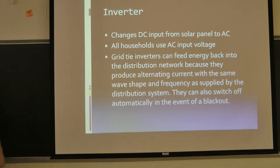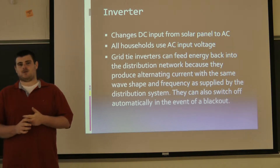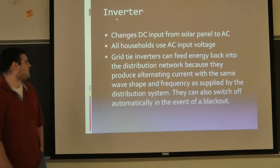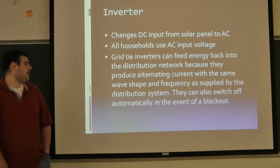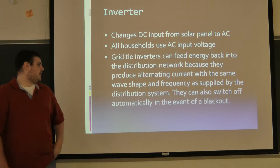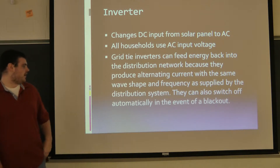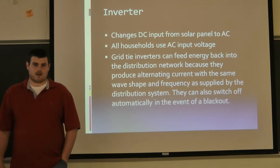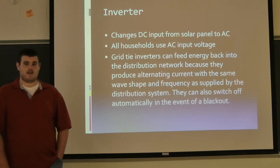The inverter will take the DC input that we get from the solar panels and convert it to AC power, which is used in every household across the world. The grid-tie inverters we are going to use can feed back energy to the distribution network because they can produce alternating current with the same wave, keeping it consistent throughout the entire smart grid system.